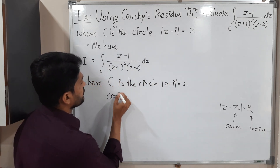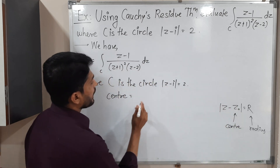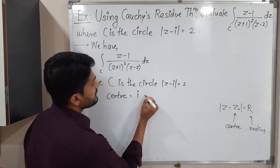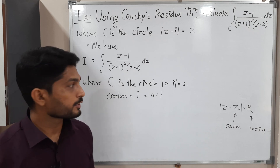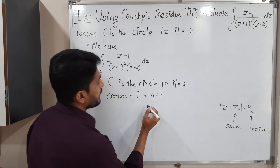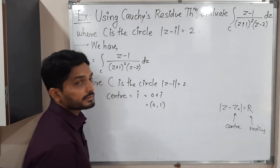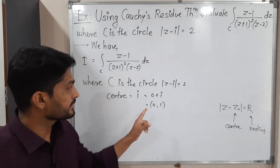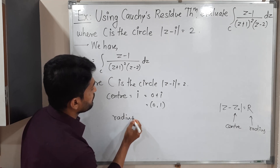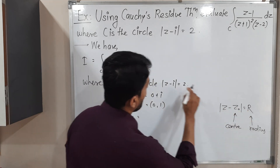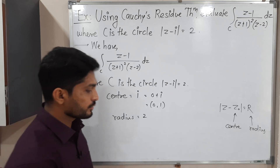Comparing, we can see that at the place of z-naught we have i, so the center is i, which means 0 plus i — that is, the point (0, 1). The real part is 0 and the imaginary part is 1. Comparing the right-hand side, the radius R is equal to 2. So the center is (0, 1) and the radius is 2.